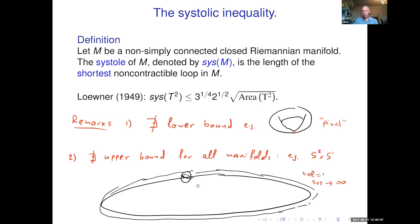There is no lower bound in general because you can always pinch a curve. The bound of Loewner is valid for any Riemannian metric on the torus. We also cannot hope for an upper bound for all manifolds in terms of volume: if you take S2 × S1, you can arrange the volume to equal 1 while the systole goes to infinity — just take a very small S2 and a very big S1.